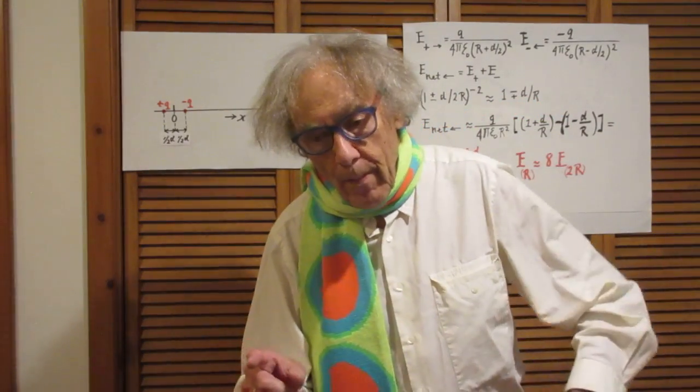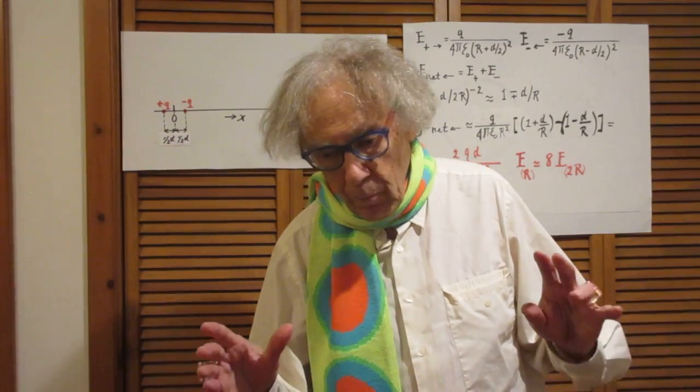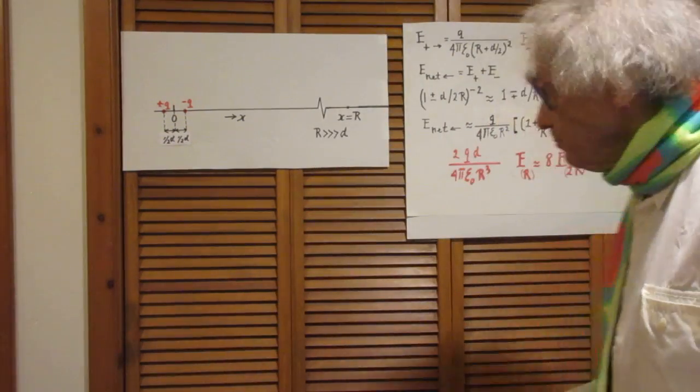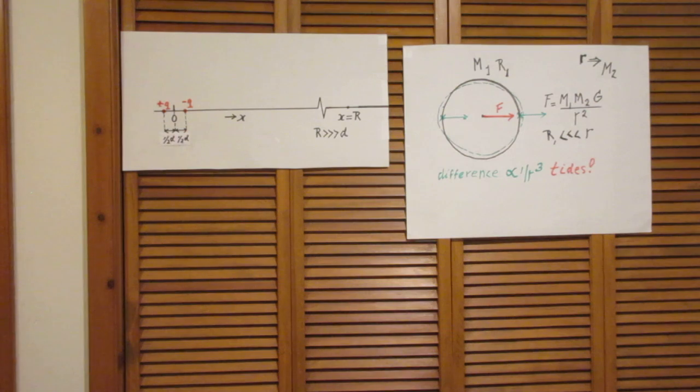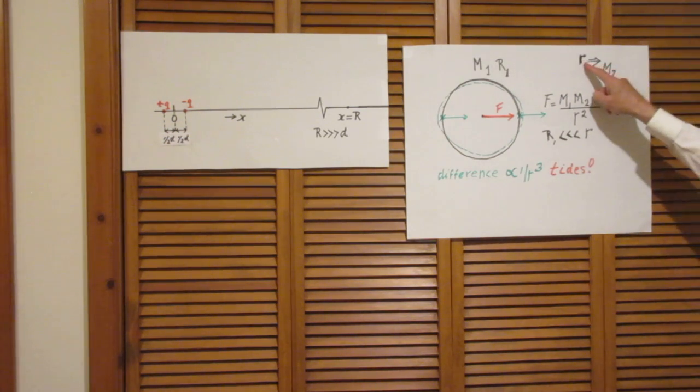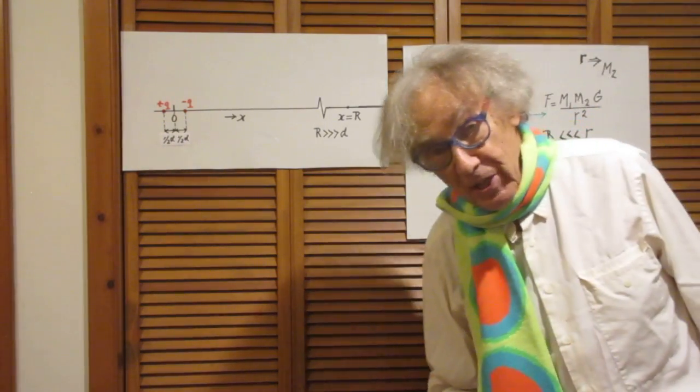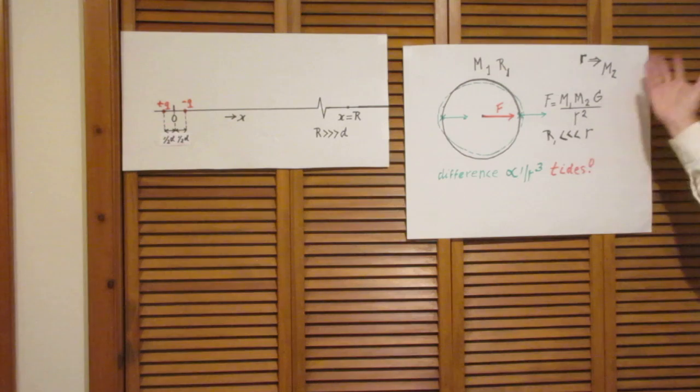This phenomenon that the net force falls off as 1 over R cubed is well known also in astronomy what we call tidal forces. Here we have the Earth, mass M1, radius R1, and at a distance very far away, little r is the moon, mass M2. And little r is way, way, way larger than R1, if you want to know how much larger, 60 times larger, roughly.